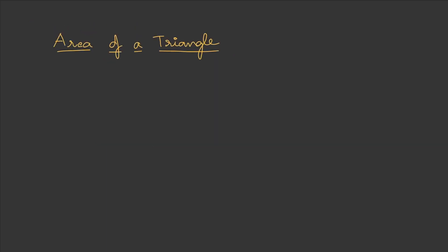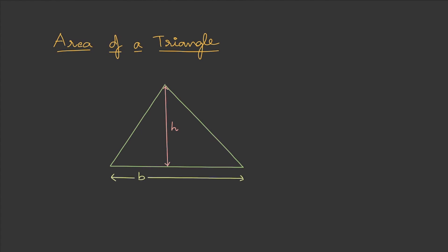Let's start with triangles. To understand the area of a triangle, consider a triangle where the height is h and the length of the base is b. When we know these two parameters, we can find the area as: Area = half × base × height, that is half × b × h. This is the standard formula to calculate the area of a triangle.